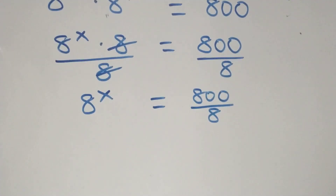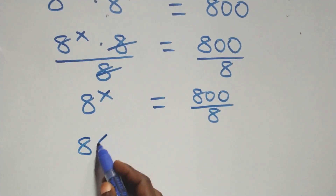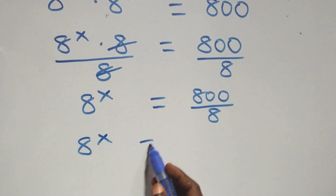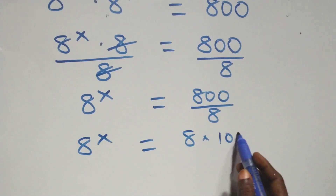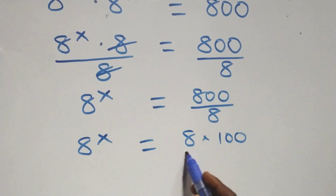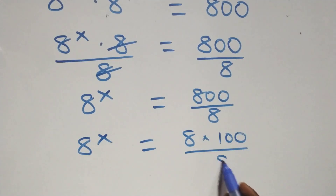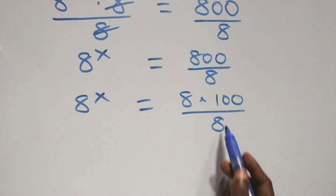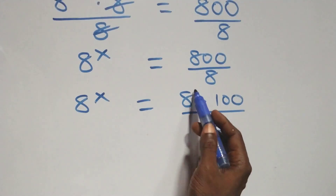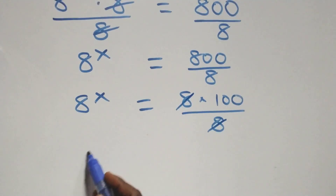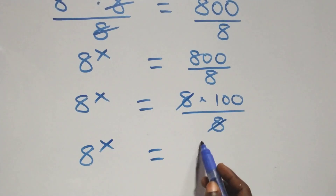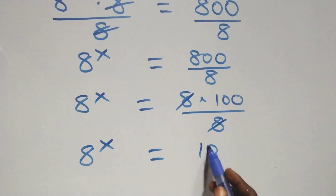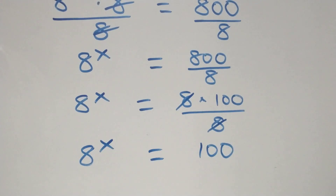We can rewrite this as 8 raised to power x equals 8 times 100 over 8. The 8s here cancel each other, and we have 8 raised to power x equals 100.